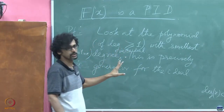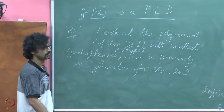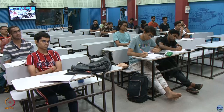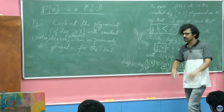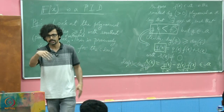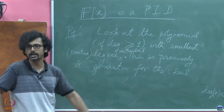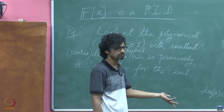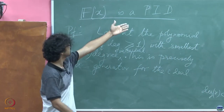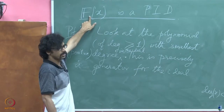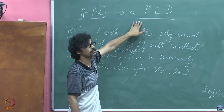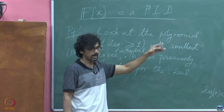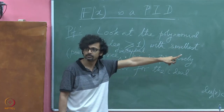So therefore, you cannot have the situation where you fail to find a generator by narrowing down your search to the smallest degree polynomial in an ideal. Anytime I tell you here is an ideal — pick out an element in this ideal which generates the entire ideal — all that you have to do is search for the smallest degree polynomial in that set. So anytime you are living inside this commutative ring of polynomials, any ideal of the ring of polynomials is a principal ideal — it can be generated by a single element.